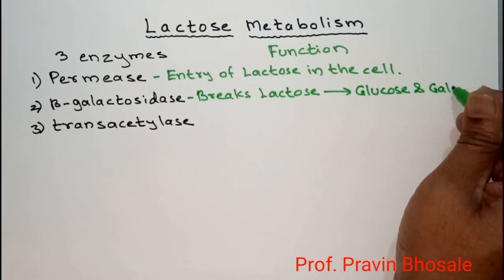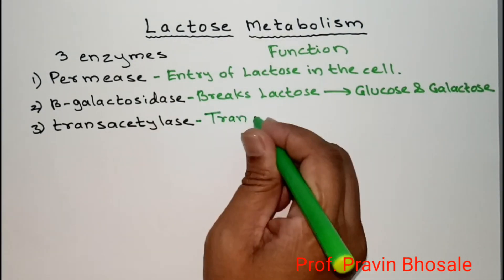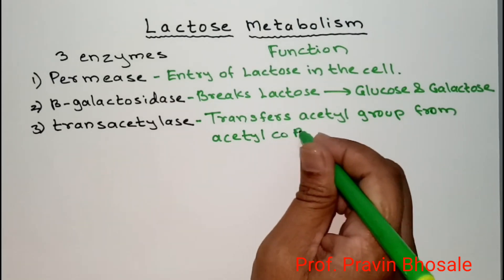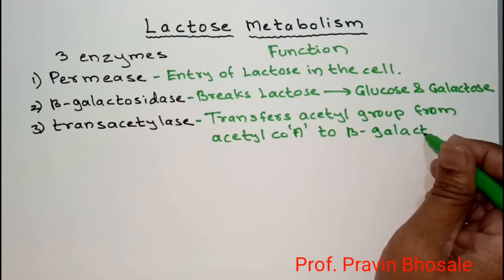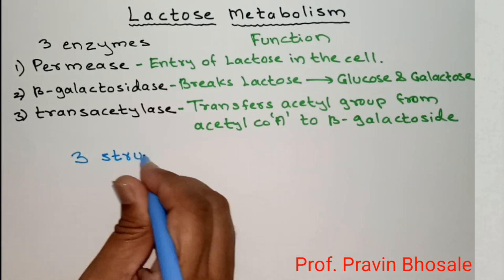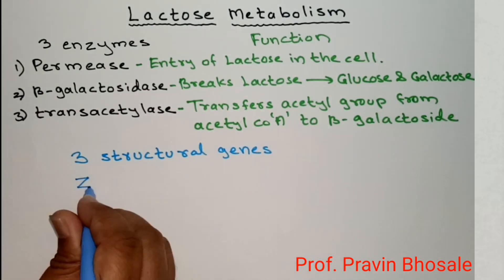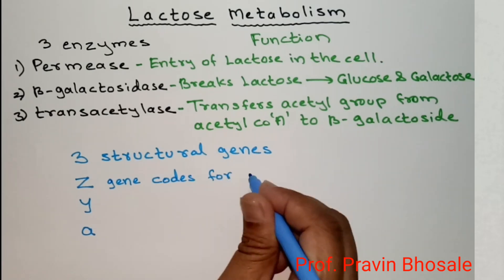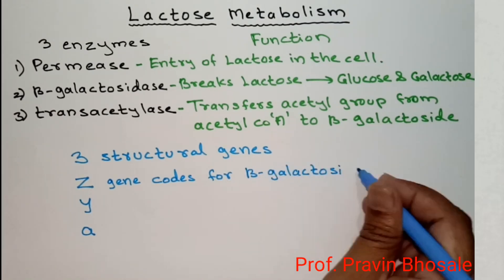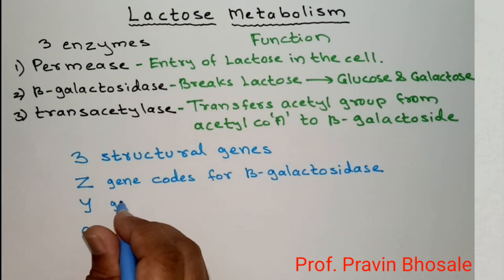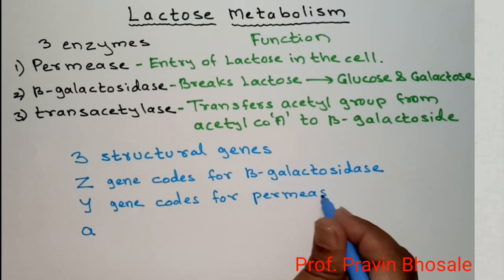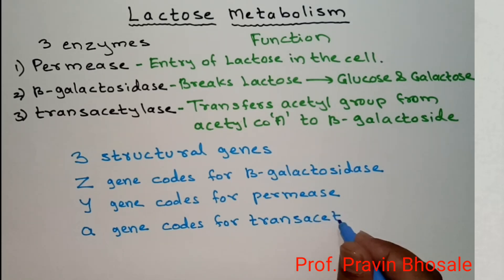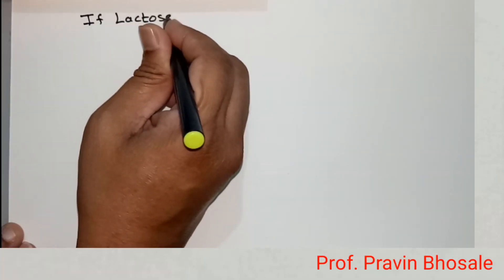Transacetylase transfers the acetyl group from acetyl coenzyme A to beta-galactoside. The three structural genes very important in lactose metabolism are Z, Y, and A. The Z gene codes for beta-galactosidase, the Y gene codes for permease, and the A gene codes for transacetylase.